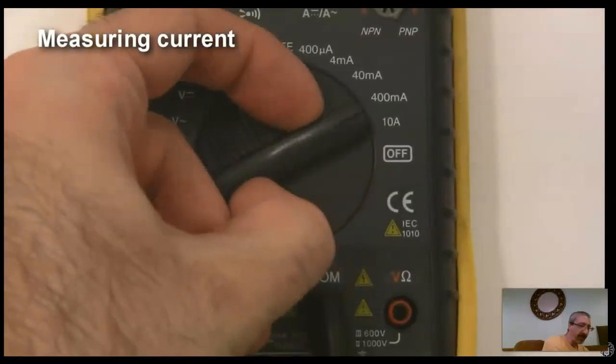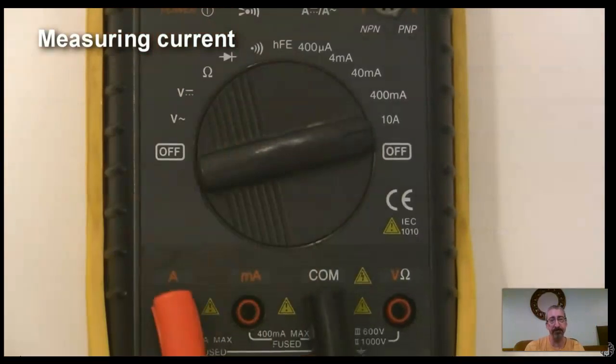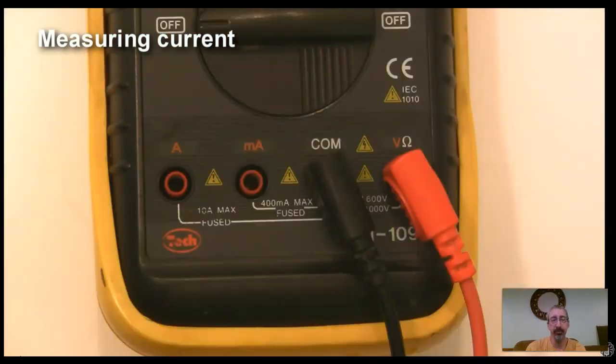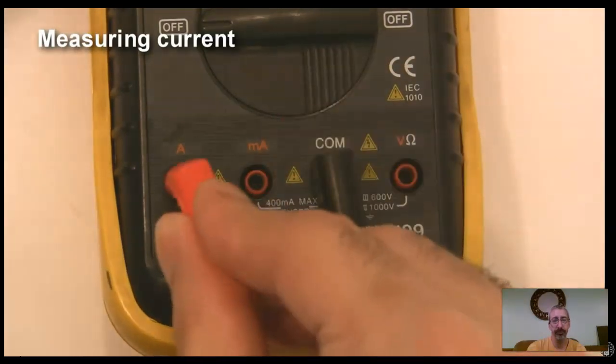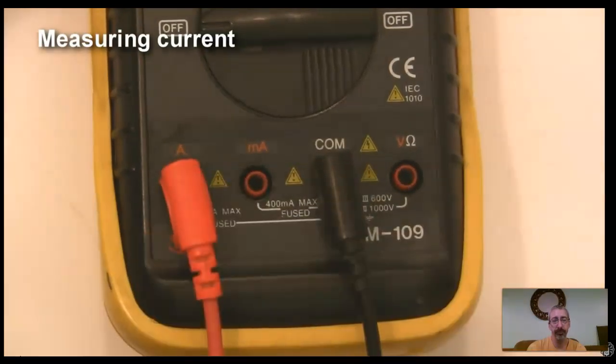Finally, let's use our multimeter to measure current. Set the dial to the amp setting. For almost all multimeters, there's going to be a separate jack just for measuring current. My multimeter has two, one for currents up to 10 amps and one for currents up to 400 milliamps. I usually start out with the amps jack, but if I need more accuracy I can switch to the milliamps jack later.